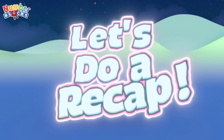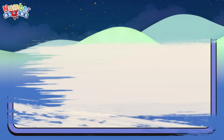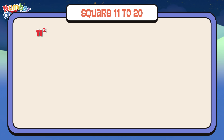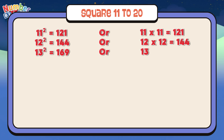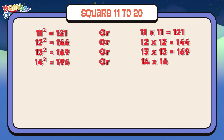And now, join me and let's do a recap! Square 11 to 20: 11 square is equals to 121, or 11 times 11 is equals to 121. 12 square is equals to 144, or 12 times 12 is equals to 144. 13 square is equals to 169, or 13 times 13 is equals to 169. 14 square is equals to 196, or 14 times 14 is equals to 196.